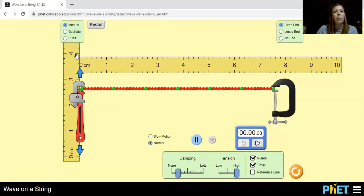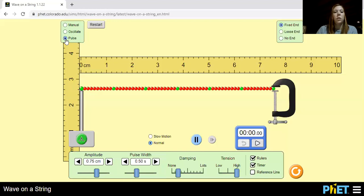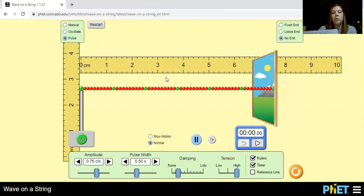We're going to make sure we're on pulse, that's where it's going to create one line there. And we're going to make sure we have no end, so then as soon as we pulse, it will go out the window. And then we're going to have dampening as none and tension as high.